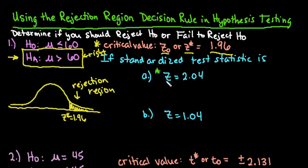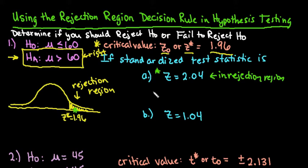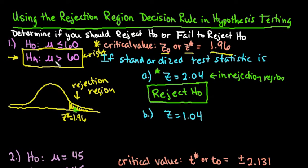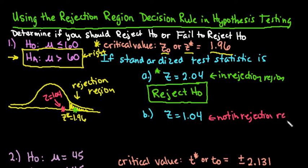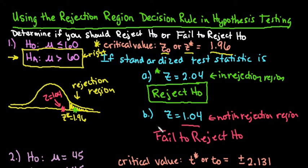Looking at our first Z score of 2.04: 2.04 falls to the right of 1.96, so it is in the rejection region. Anytime it is in the rejection region, you reject the null hypothesis. That tells us our evidence points to the alternative being true. For the next one, Z = 1.04 falls to the left of 1.96, so it's not in the rejection region — we fail to reject the null hypothesis.